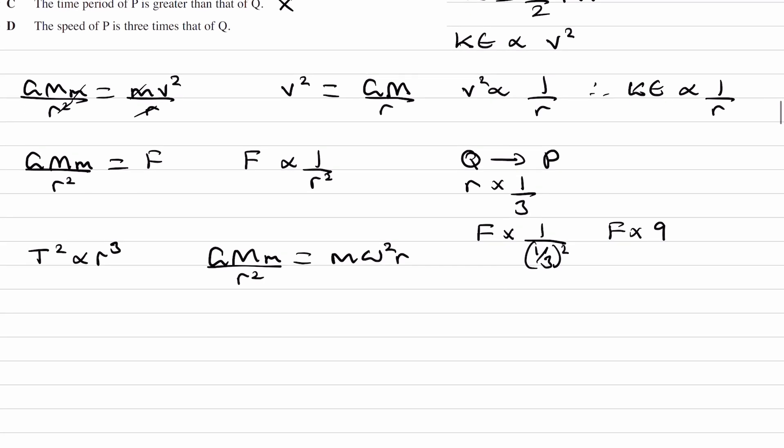And finally for D, the speed of P is three times that of Q, so again we're going to use proportionalities. Orbital speed is equal to GM over R. We derive that up here. So then we can see that V squared is proportional to 1 over R. The numerator is constant, or R constants. G is a constant. M is the mass of the earth. So V is proportional to 1 over root R.